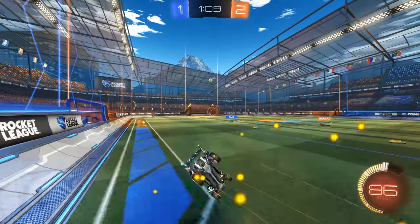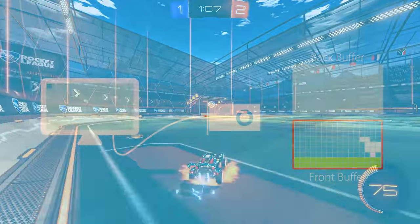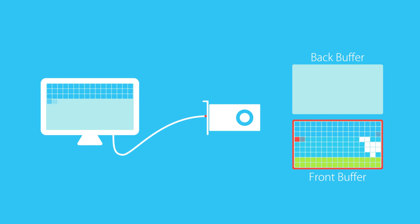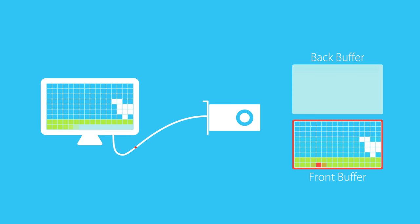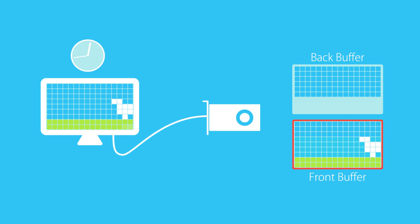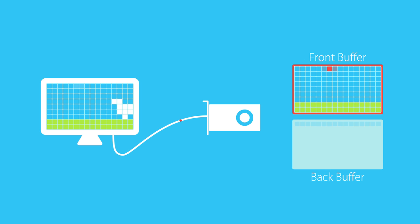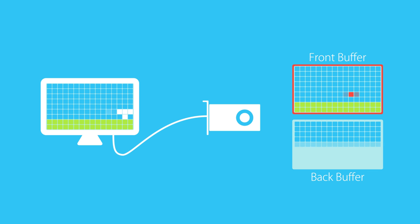That leaves us with G-Sync, or what is essentially the same idea for AMD cards, FreeSync. They do the opposite of V-Sync. Instead of letting the GPU wait for the monitor, the monitor waits for new frames from the GPU, so it only starts reading from the front buffer if a new frame is available. This means no tearing, no added input lag, and less stuttering when you get unstable framerates.